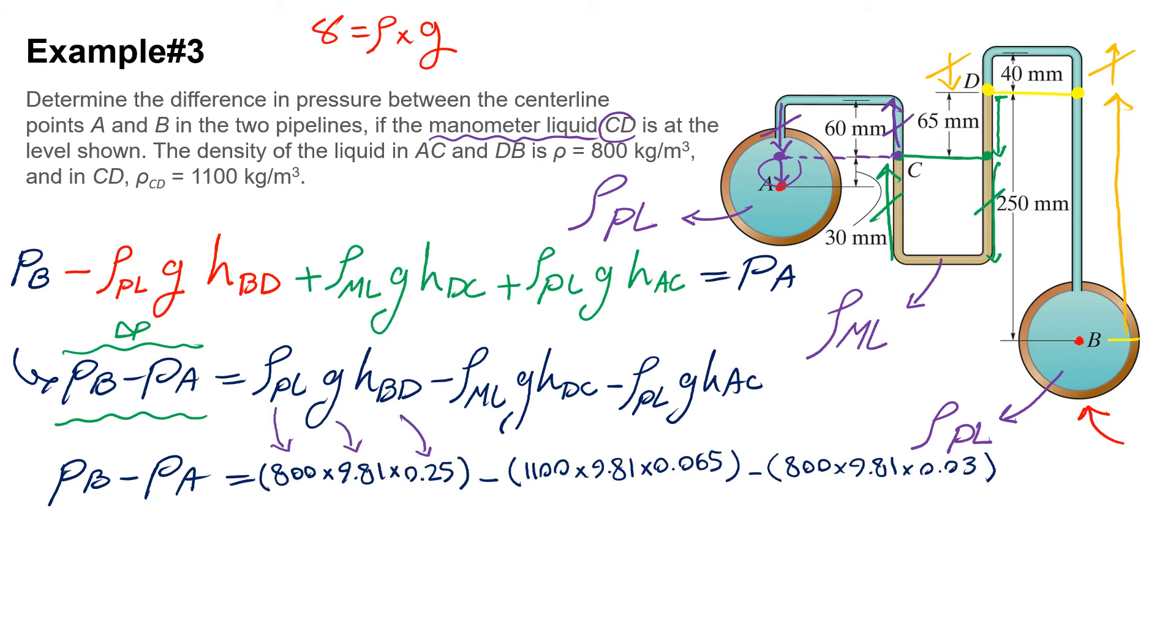So after plugging in all the numbers, I can write that PB minus PA - in other words, delta P from B to A - is 1.03 kilopascals or kPa.